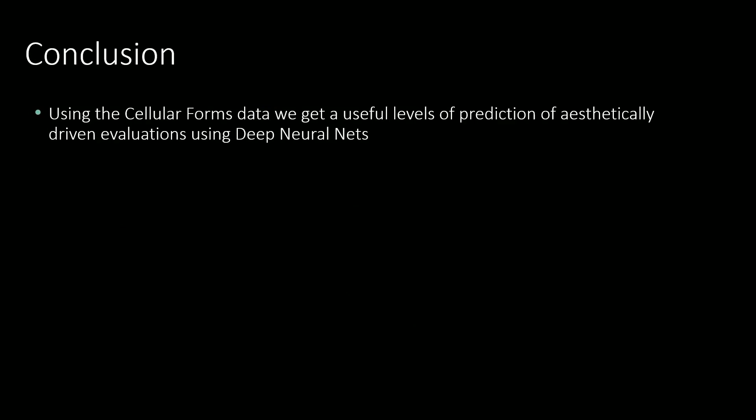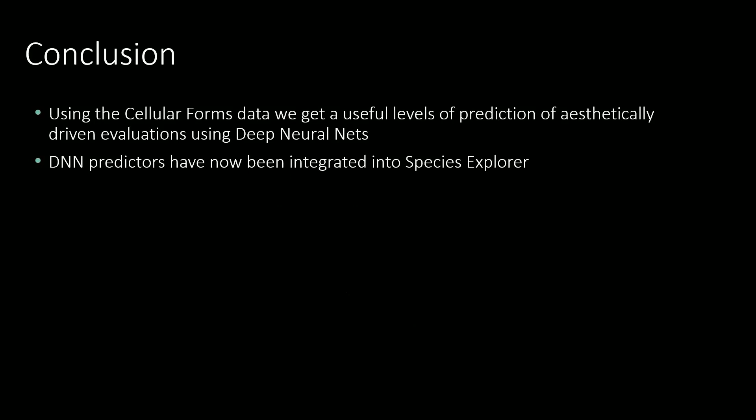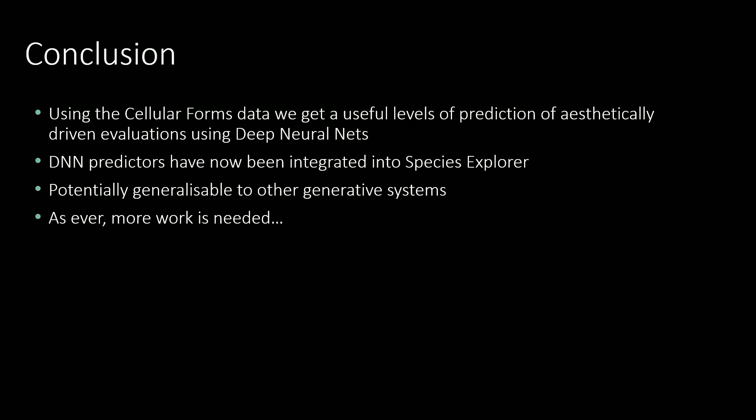In conclusion, using the Cellular Forms dataset, we have been able to get useful levels of prediction of aesthetically driven evaluations using deep neural nets. These have now been integrated into Species Explorer in a number of ways, making it significantly easier to divide results into categories and providing tools to navigate to places in genotype space where interesting transition behaviour might occur. So far this is only one test case with one specific user, but we believe we've been using a real dataset with genuine ecological validity, and the methods should generalise to other systems and other artists' personal aesthetics.